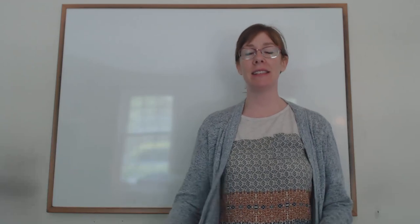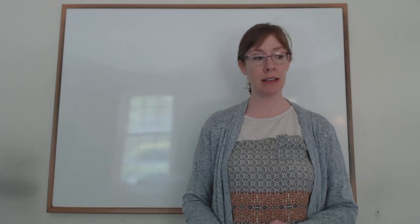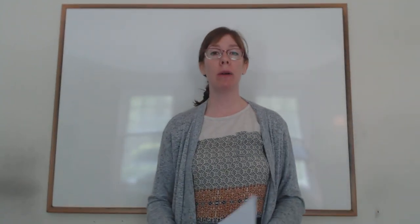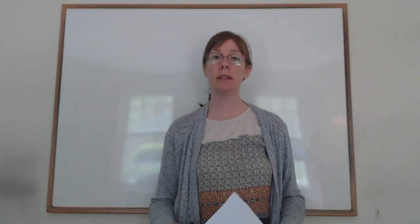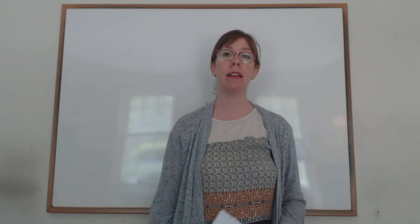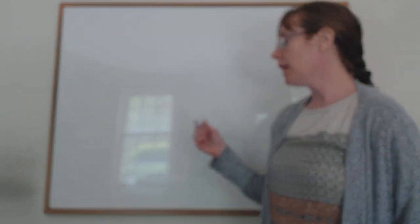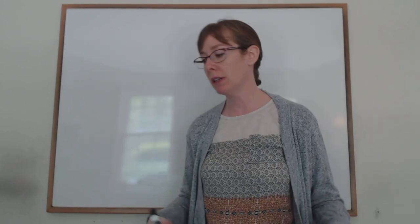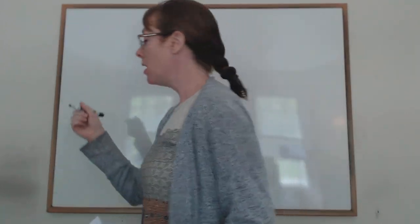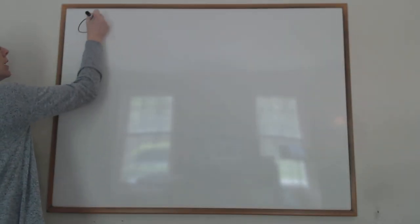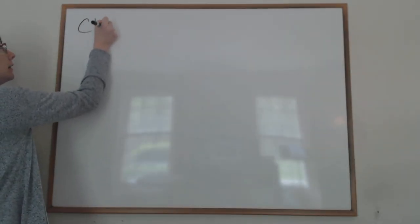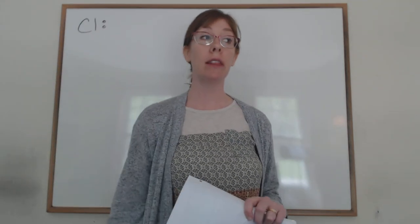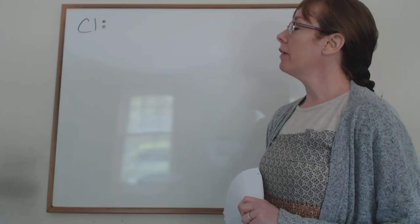This is the second part of the chapter 8 lecture video. I want to begin with the topic of core versus valence electrons. Let's put up an electron configuration for an atom we can use to explain this — let's choose chlorine. See if you can write the electron configuration; we'll just do the electron configuration, not the orbital diagram.